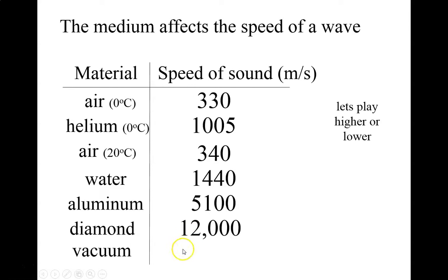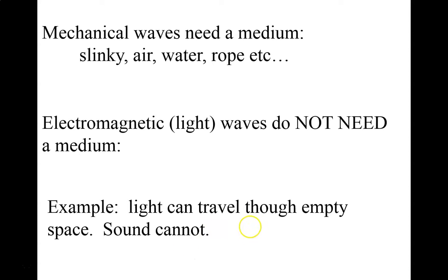What about the speed of sound through a vacuum, where there's no air? When there's no air, there's no sound. Mechanical waves need a medium such as a slinky, air, water, or rope. Electromagnetic waves do not need a medium — that's how light travels from the sun to the earth through the vacuum of space.